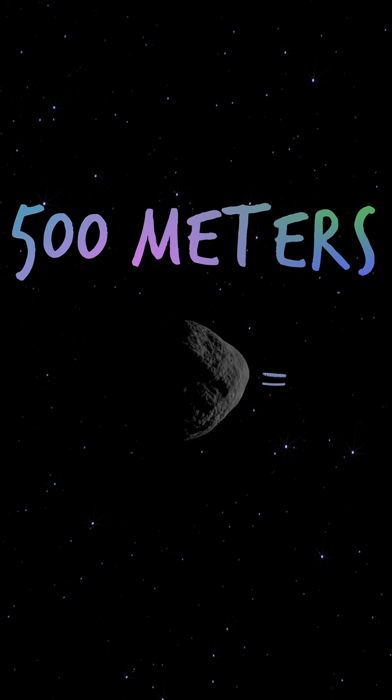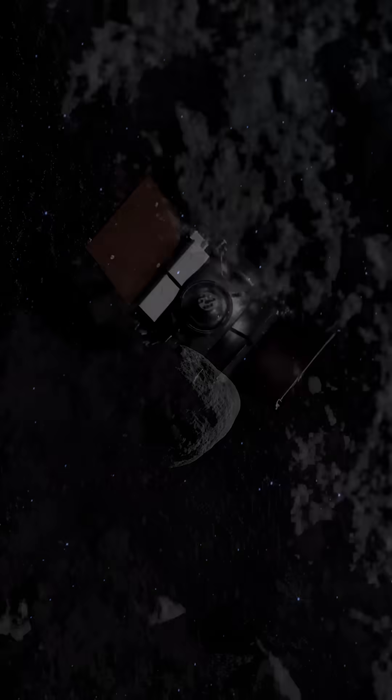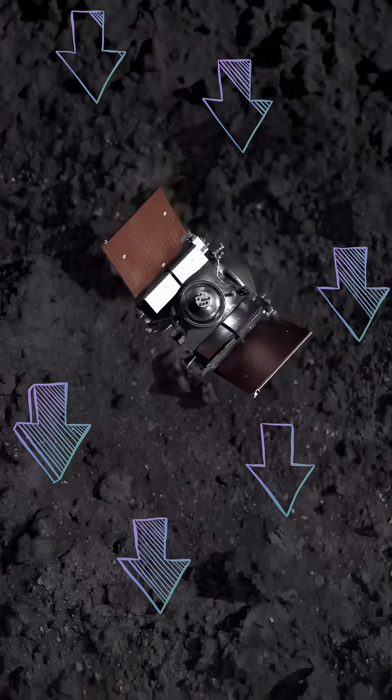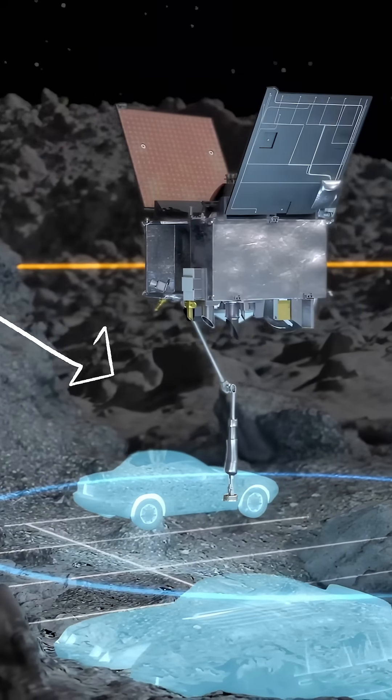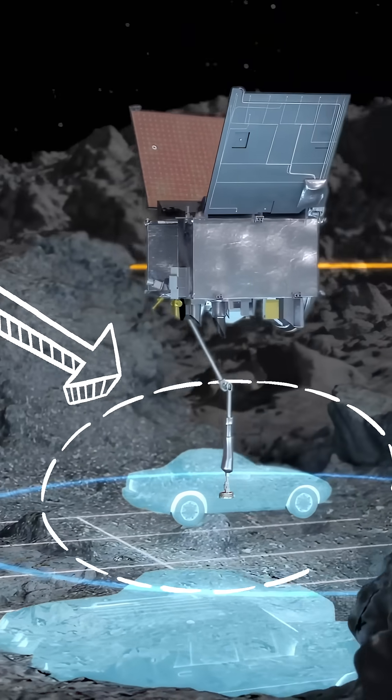OSIRIS-REx went to asteroid Bennu. It is a relatively small body in space. It is rocky. It has boulders all over the surface. Some are big as cars, lots of them are really tiny, too.